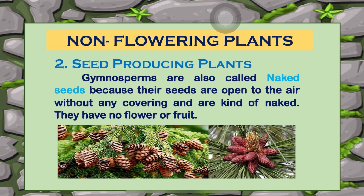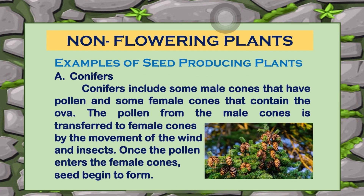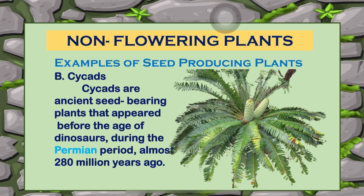The first example of seed-producing plants, or gymnosperms, is conifers. Conifers include male cones that have pollen and female cones that contain the ova. The pollen from the male cones is transferred to the female cones by wind and insects. Once the pollen enters the female cones, a seed begins to form.